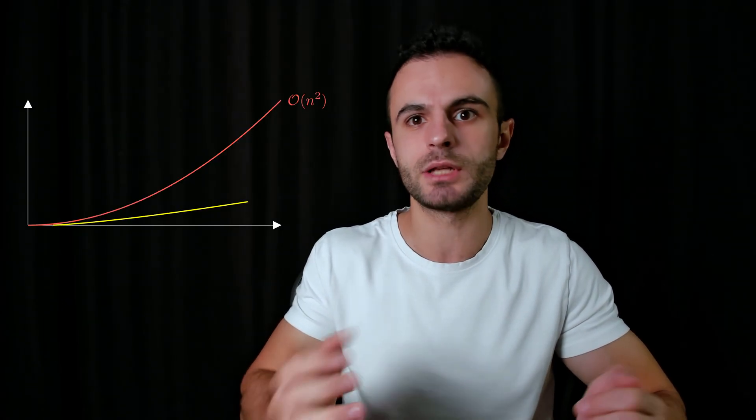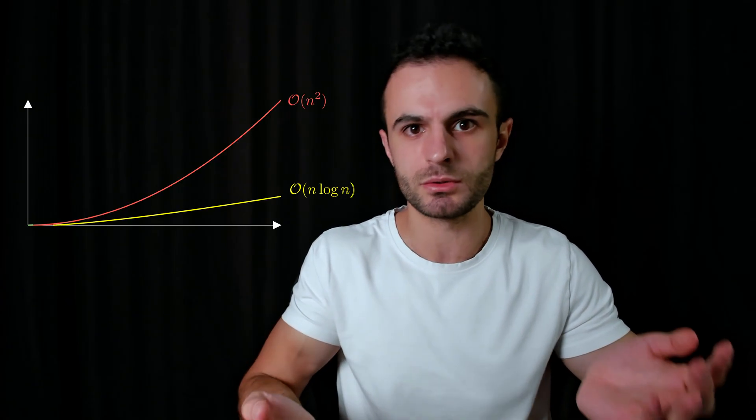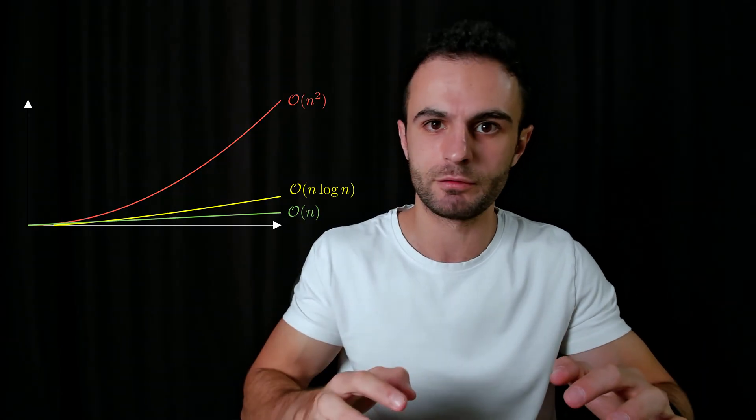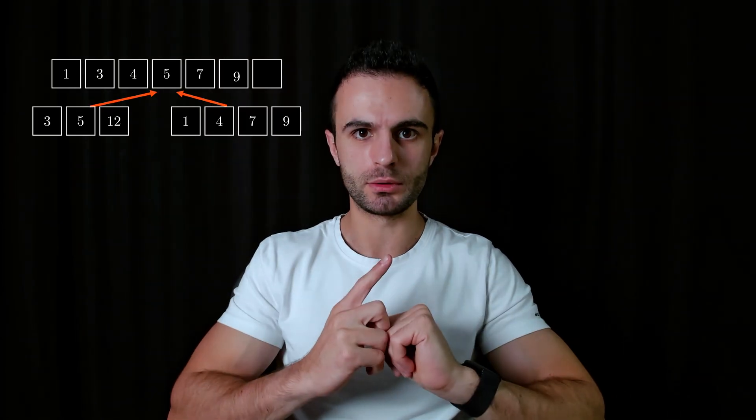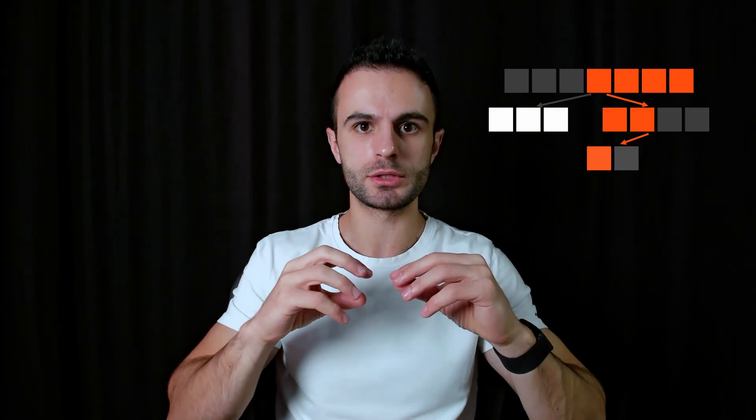We will analyze the time and memory complexity to understand the pros and cons of using MergeSort in real life. The MergeSort algorithm consists of two main parts: the first is merging two sorted arrays into one sorted array, and the second is recursively splitting the array into two parts and then merging those two parts together in increasing order. Let's go over each of those parts one by one.